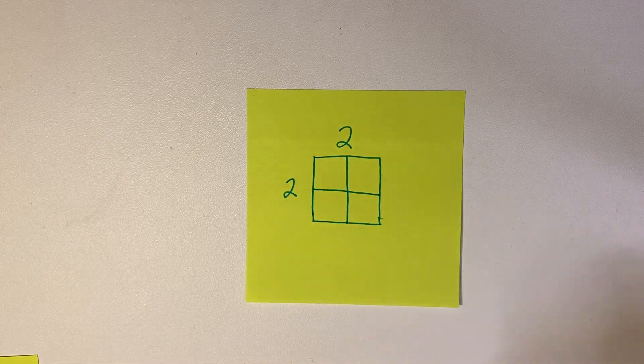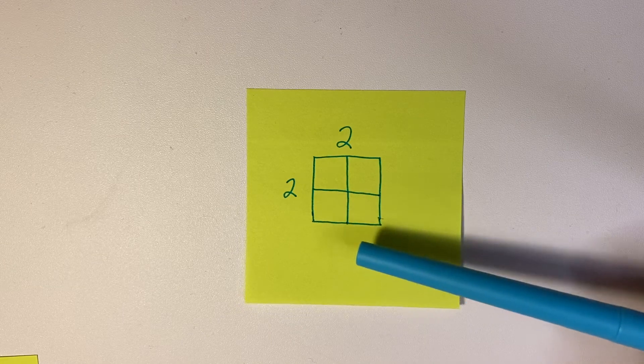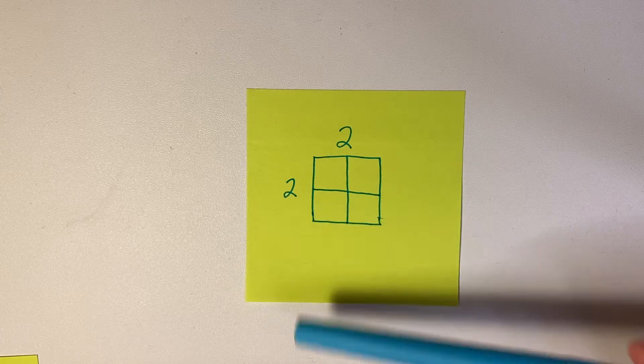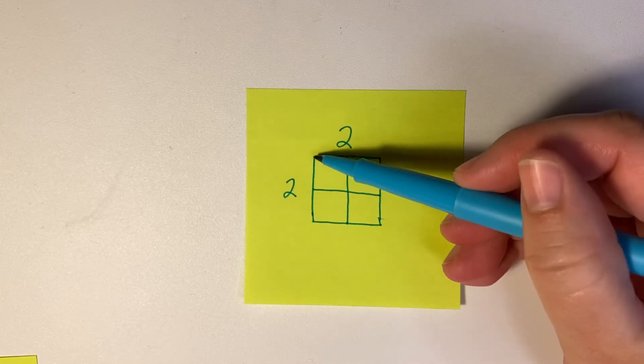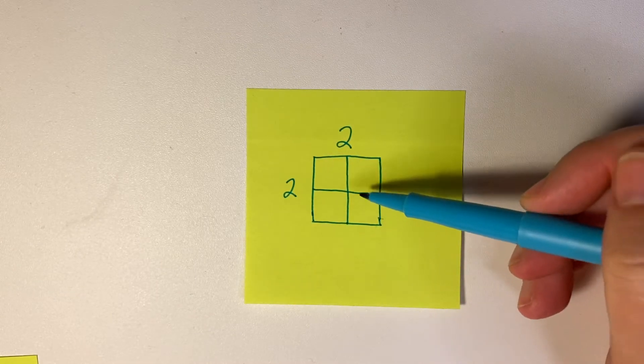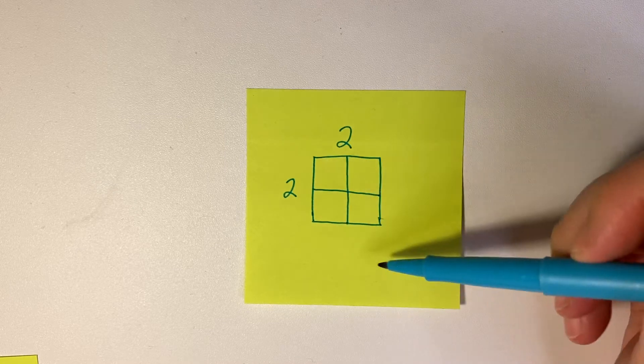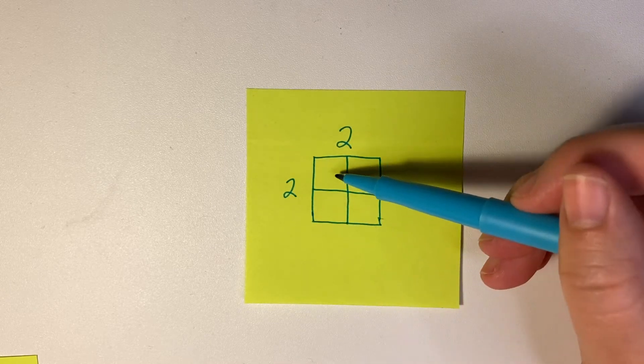You'll see that if you start here, one, two, and if you start here, one, two—so this is two by two. You'll see that there are four squares.